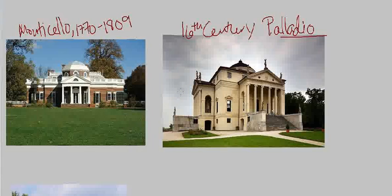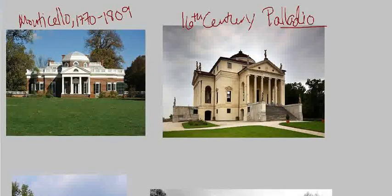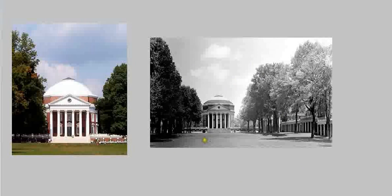One of the most important projects for Thomas Jefferson was his work on the University of Virginia. Here we have the central quad — the central area of the University of Virginia — with the rotunda at the end and the flanking buildings on the sides.